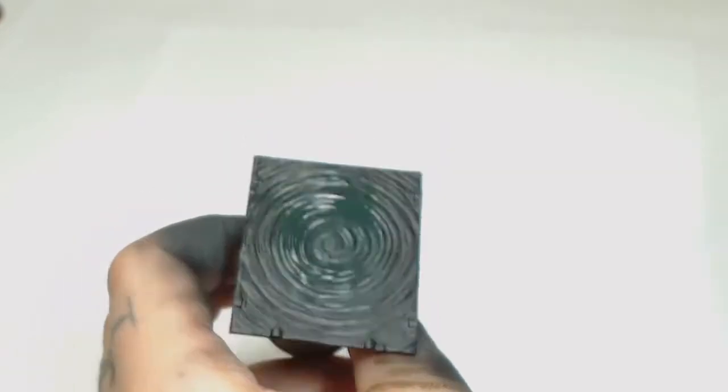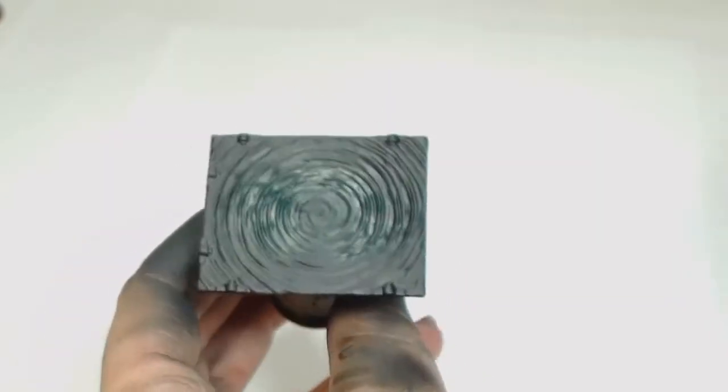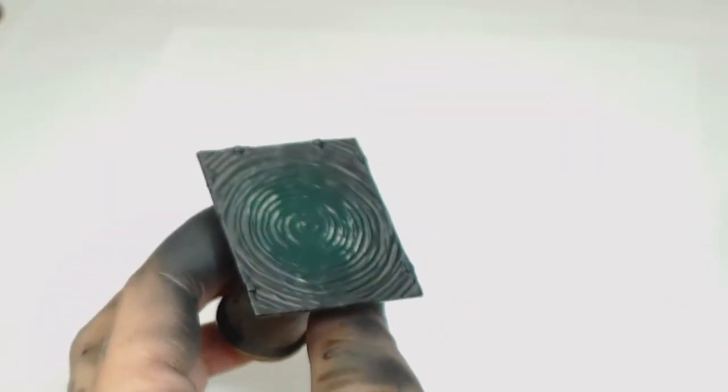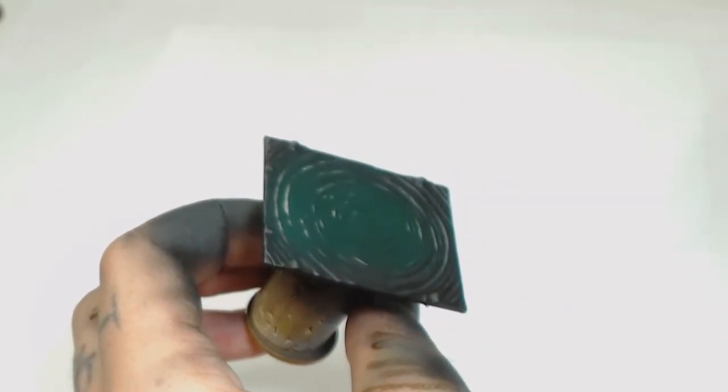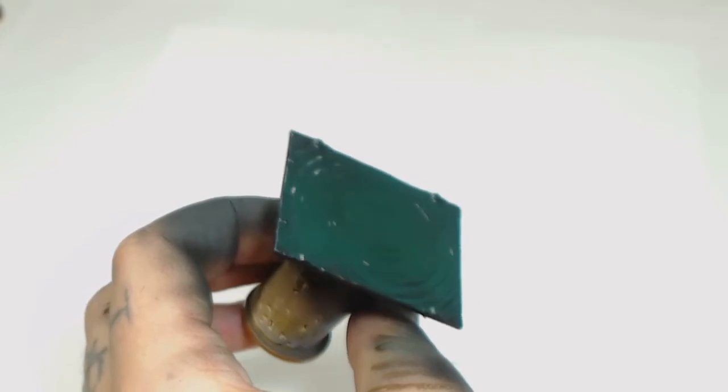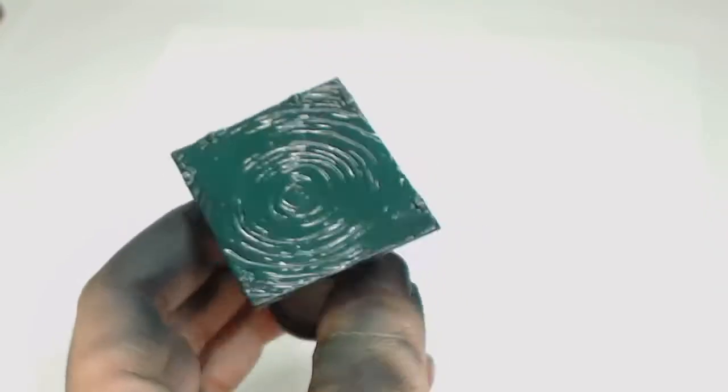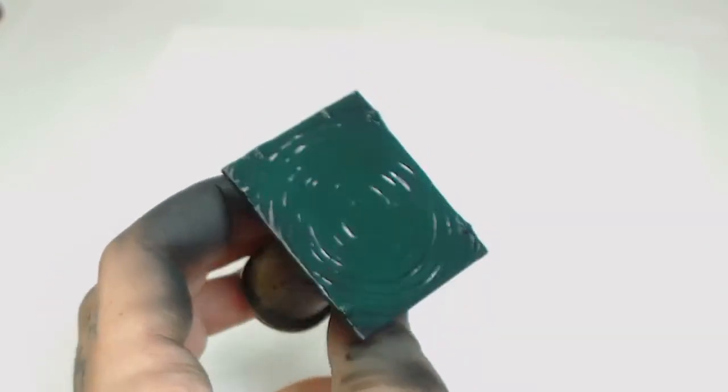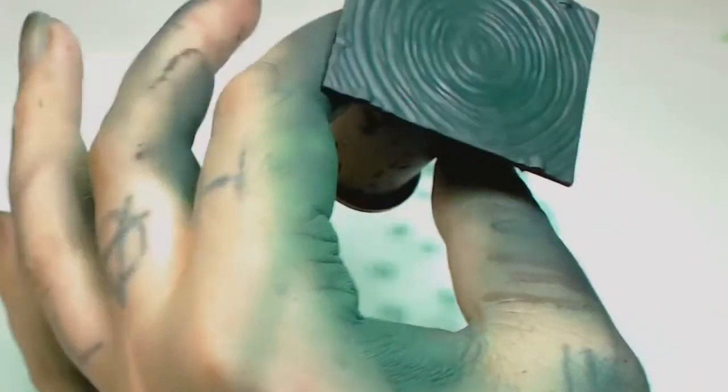Anyone who knows anything about an airbrush knows that it sprays in a cone. Whatever the middle hits is going to be the most colored. So what we're doing is going around the circle edge and just following that around. I'm going to speed this up in a second because you don't want to see me spray the whole thing. We're basically going to aim most of that spray towards the middle.